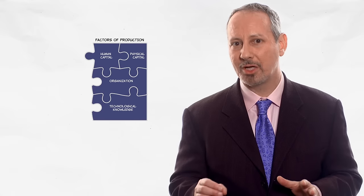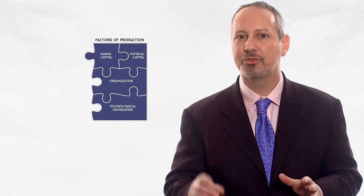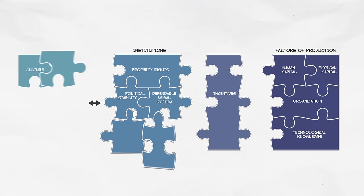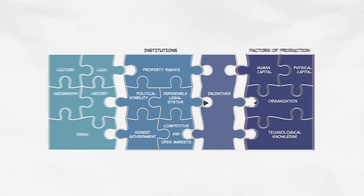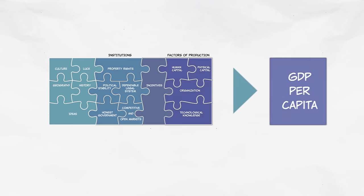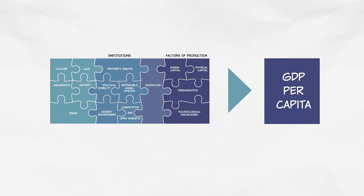But let's step back and remember that the factors of production in the Solow model are just one piece of the puzzle. When it comes to explaining prosperity, we also need to remember the importance of institutions. The institutions that create the incentives to accumulate and to use the factors of production in socially beneficial ways.